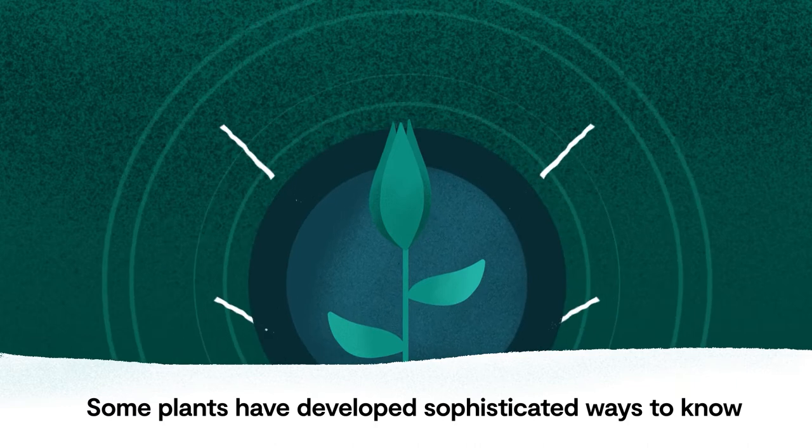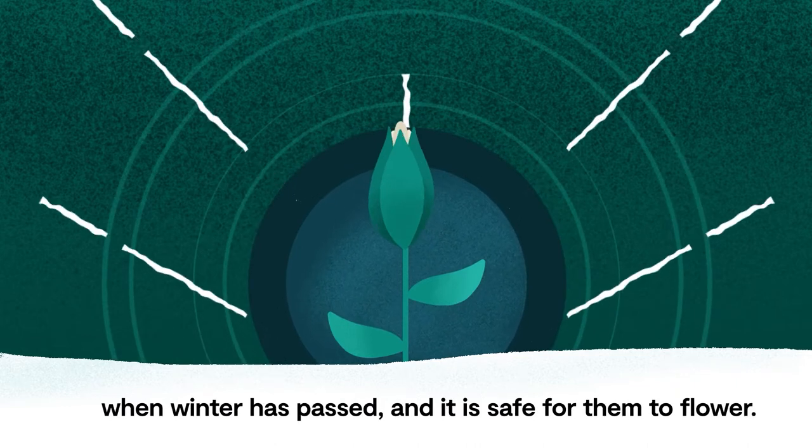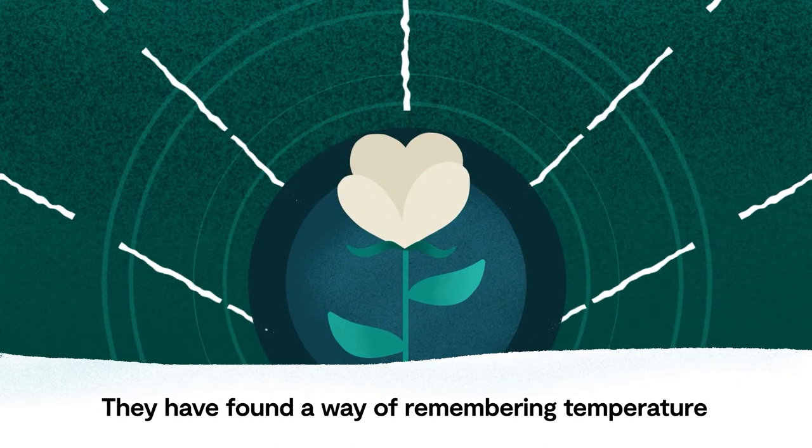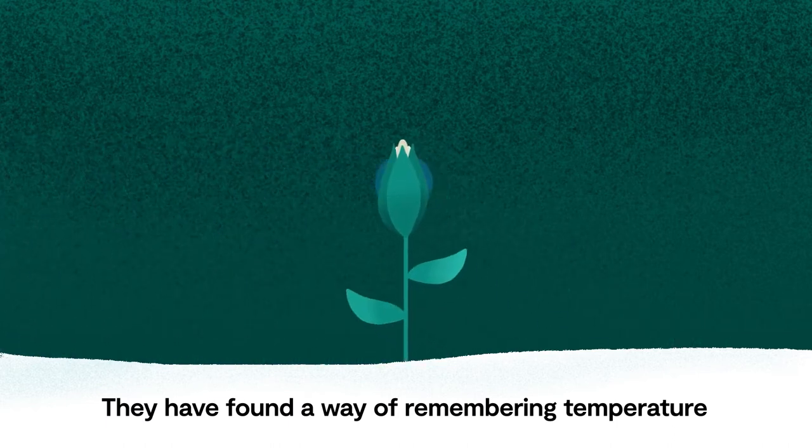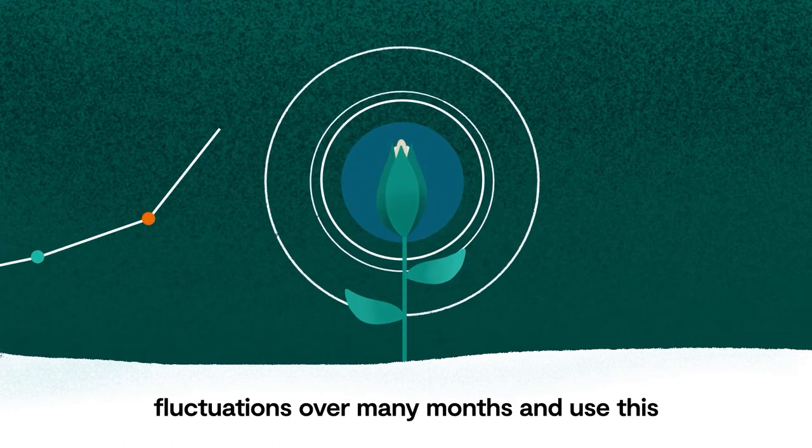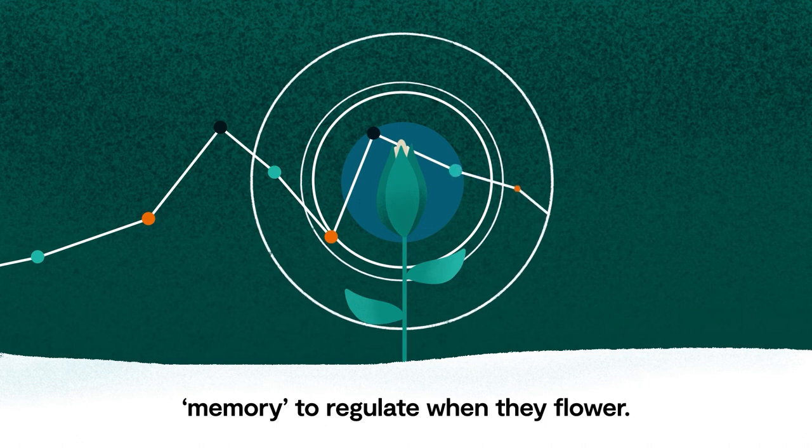Some plants have developed sophisticated ways to know when winter has passed and it is safe for them to flower. They have found a way of remembering temperature fluctuations over many months and use this memory to regulate when they flower.